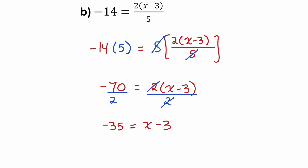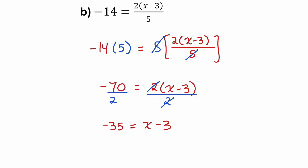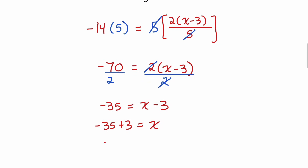Like we've been doing, we could use the balance method by adding 3 to both sides to get rid of that minus 3. But when we only have addition and subtraction left, we can think of rearranging by moving to the other side using the opposite operation. So that minus 3 moves to the other side by adding 3, giving us negative 35 plus 3 on the left, and just x on the right, which means x is equal to negative 32.